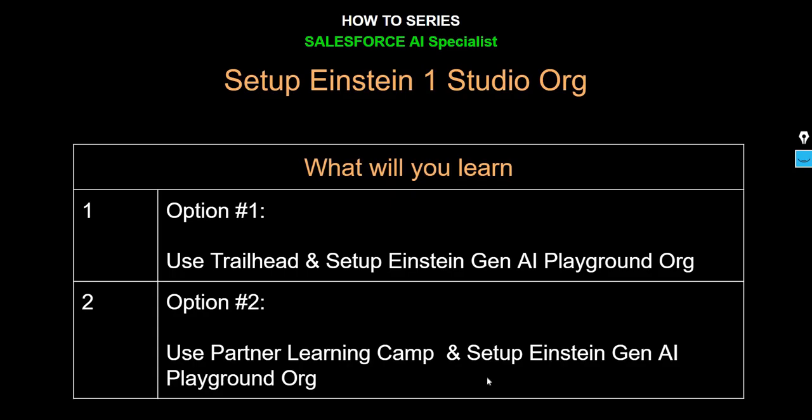So either you can use Trailhead or Partner Learning Camp. In subsequent videos, we'll see how to enable Einstein generative AI, because when you use Trailhead the Einstein GenAI feature is automatically enabled, but when using Partner Learning Camp or an existing org with an Einstein One Studio license, you need to manually turn on Einstein GenAI to use Copilot, Prompt Builder, and features like generating personalized emails.